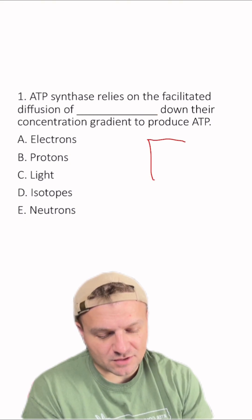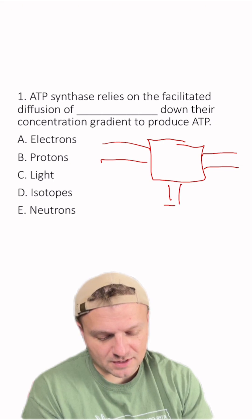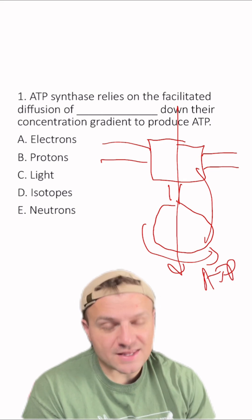Remember that ATP synthase is going to be located in the mitochondrial membrane, and it's going to look something like this, where something's going to flow through it, and it's going to make it turn, making ATP. Now, what is that molecule?